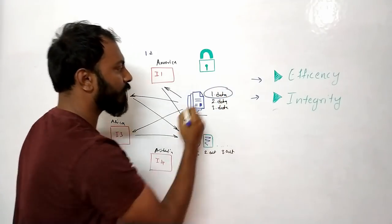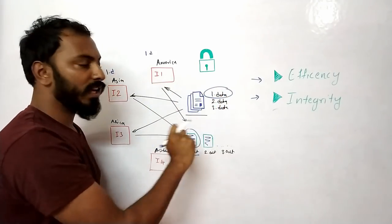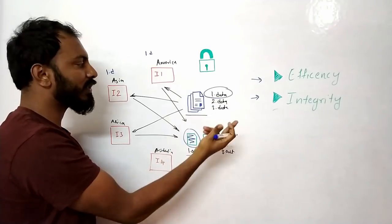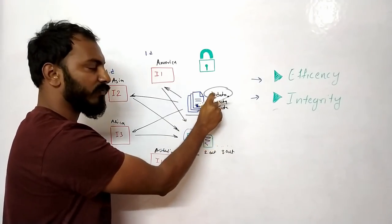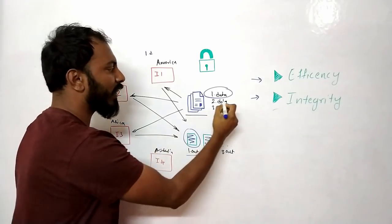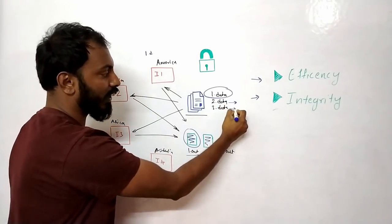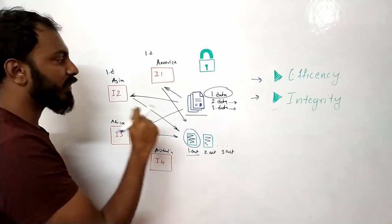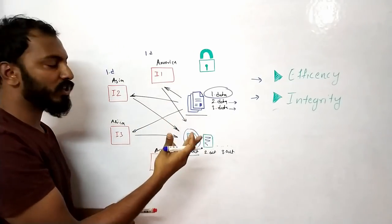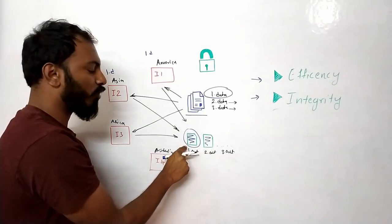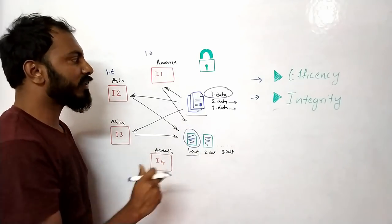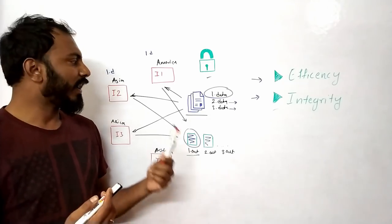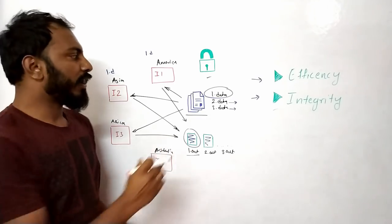The only solution to solve this problem is to lock the file. As soon as an instance picks up a file, it should lock it. When another instance comes to pick up the same file, it sees that the file is locked and someone must be processing it. So it picks up a different unlocked file instead. Since the file is not processed by multiple machines, there is no chance the output file will get corrupted.